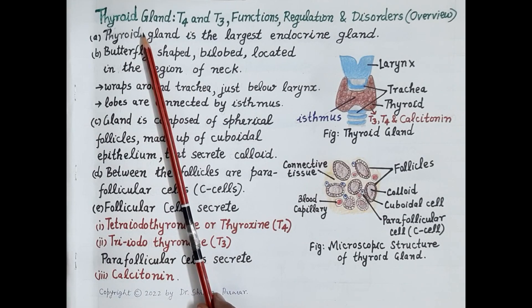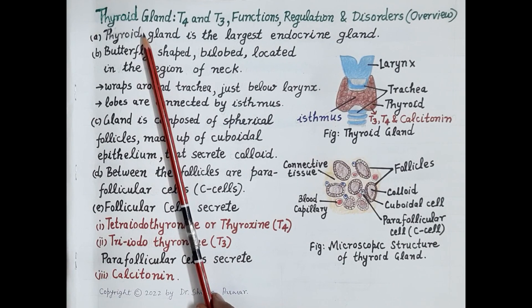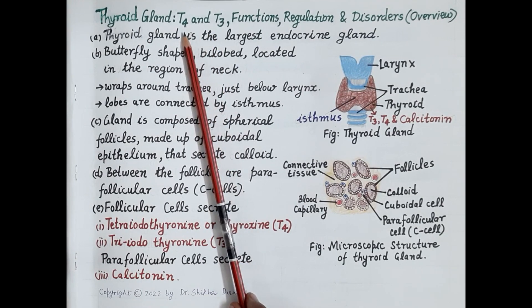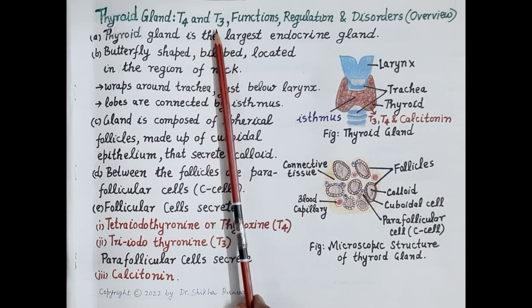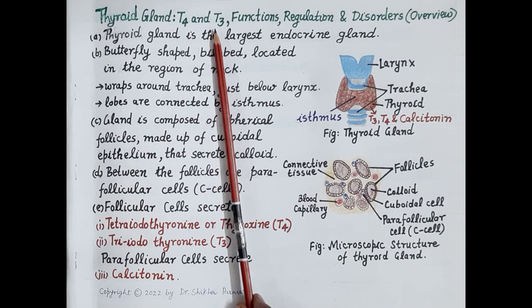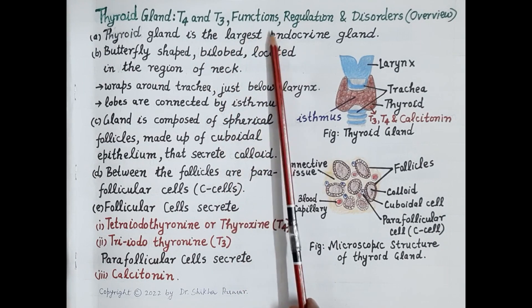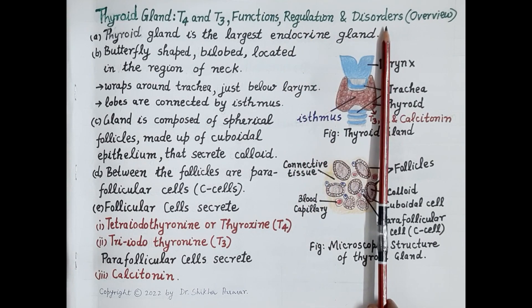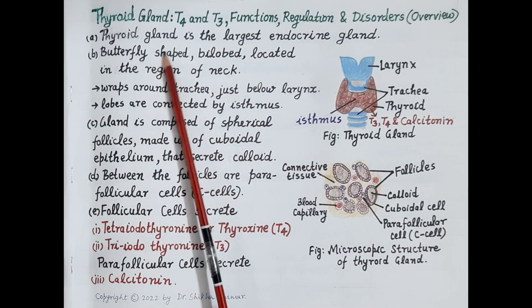Hello students. In today's video we are going to discuss the structure and location of the thyroid gland, then functions of thyroid hormones namely thyroxine (T4) and triiodothyronine (T3). We will also study regulation of secretion of T3 and T4, and in addition we are going to learn about disorders of the thyroid gland.